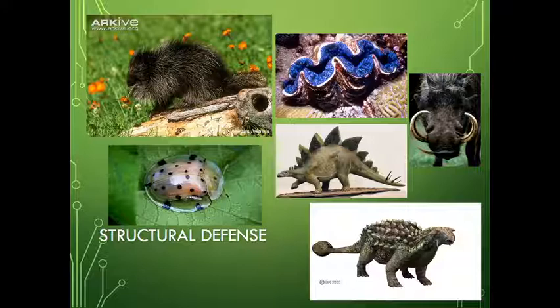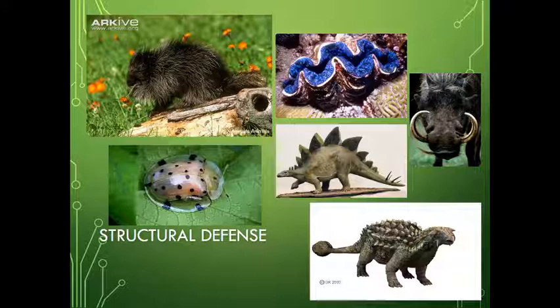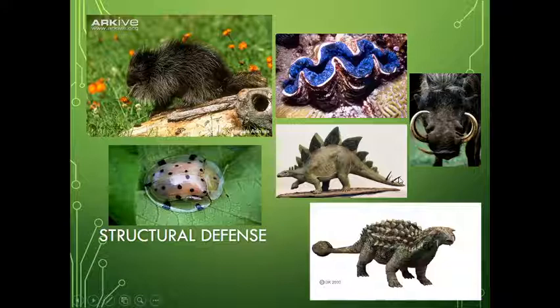Then we have structural defenses, which are extremely common. These include shells — beetles are a great example with their extremely hard shells, and there are examples of shells across many different phyla, between turtles, mollusks, and others. Think also about the quills of a porcupine, the spikes on the tail of a stegosaurus, and warthog tusks — they're all structures that organisms use to keep from being predated upon, and they work quite well.